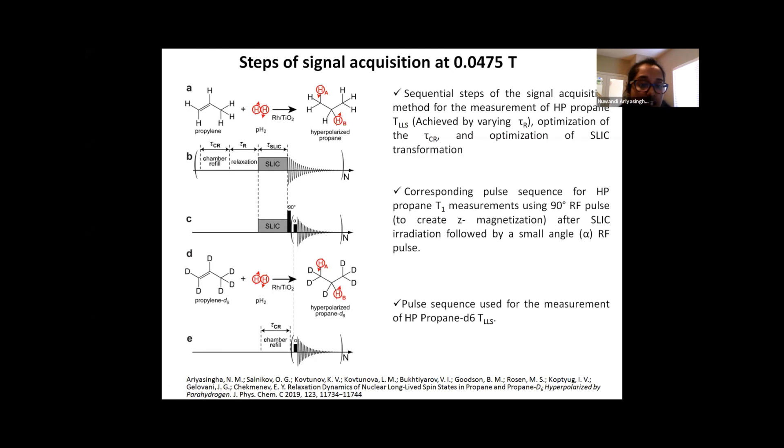The pulse sequence which is shown in C is the corresponding pulse sequence for HP propane T1 measurements, where you have a small angle excitation pulse followed by the decay repeated many times to get the T1 decay data. So at the same time, we wanted to try and see if the long-lived lifetime of the HP state can be increased by deuteration. So we used deuterated propylene as well. And this is the pulse sequence we use to obtain the decay data for deuterated propane.